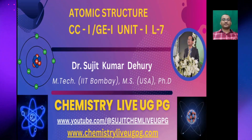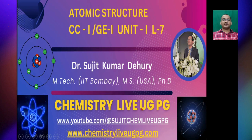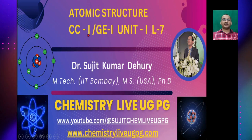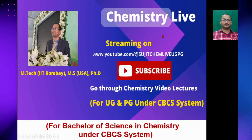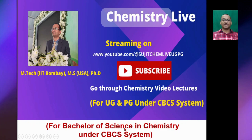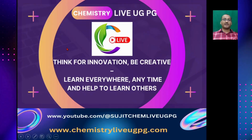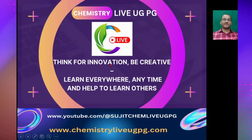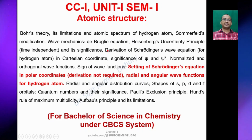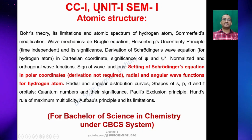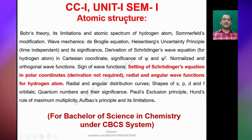Hi guys, welcome back to YouTube channel Chemistry Live UGPG. Today we are going to talk about atomic structure, CC1 paper GU1, unit 1, lecture 7. This will be highly beneficial for BSc chemistry students under CBCS syllabus. This is the syllabus CC1 paper for BSc honors students and GU1 paper for generic students.